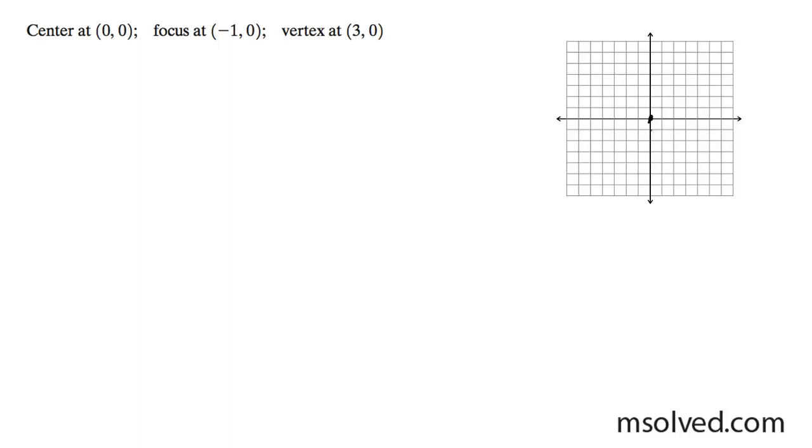So our center is at (0,0). One of our foci is at (-1,0). So that would be over here, and (1,0) to complement that. And the vertex is at (3,0) and (-3,0).